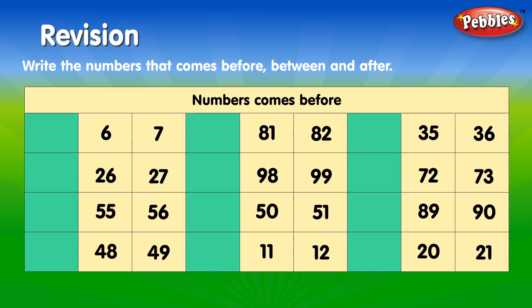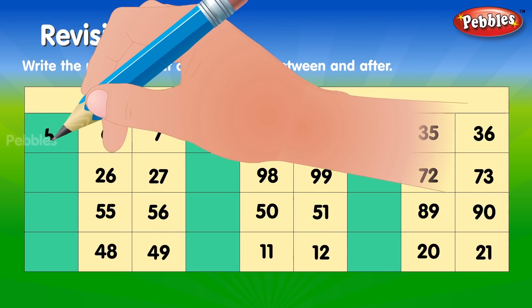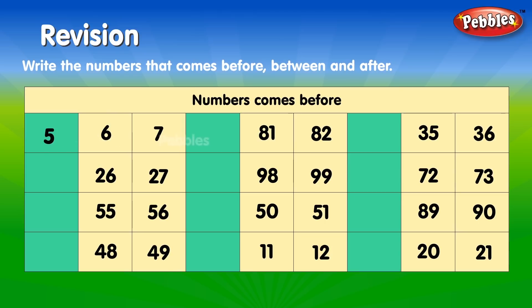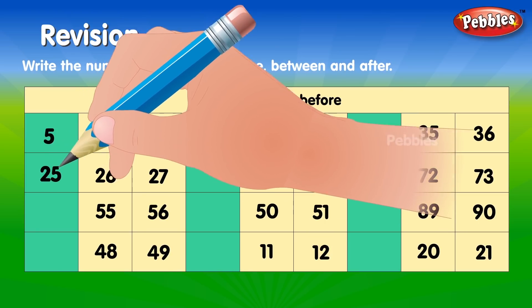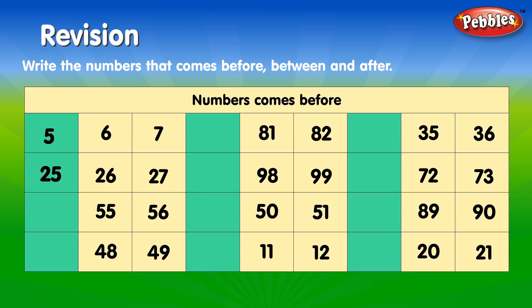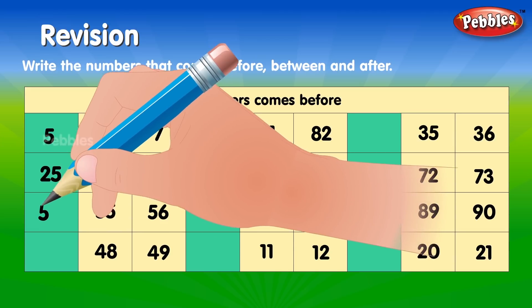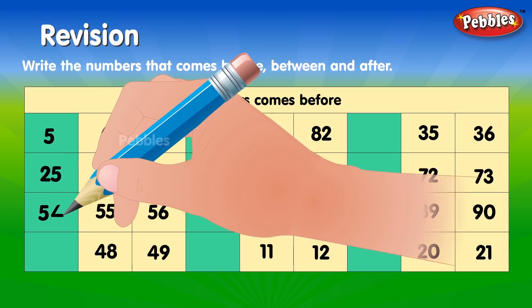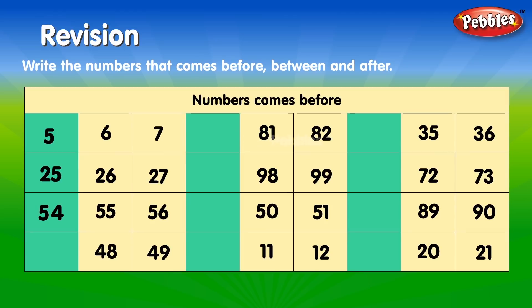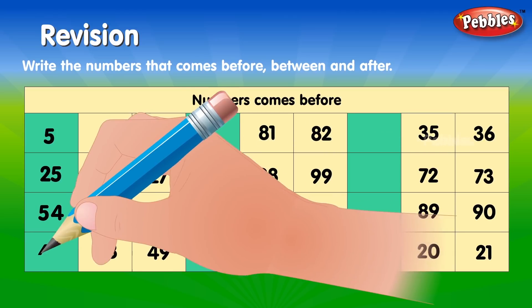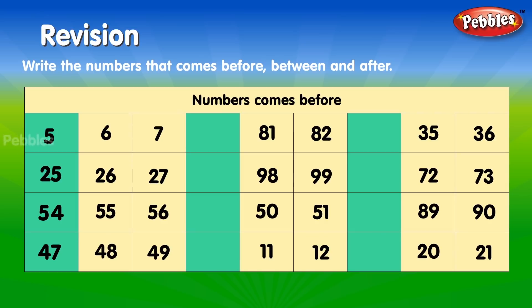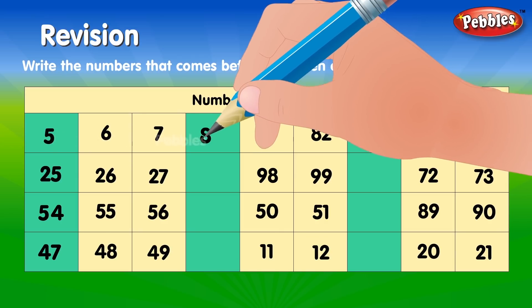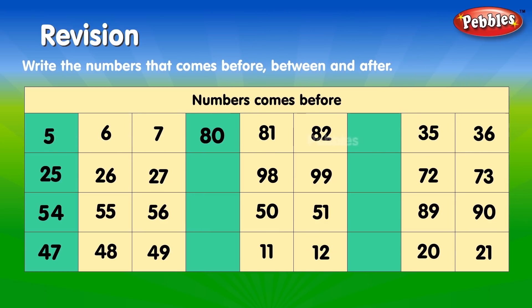Number comes before. 5, 6, 7. 25, 26, 27. 54, 55, 56. 47, 48, 49. 80, 81, 82.